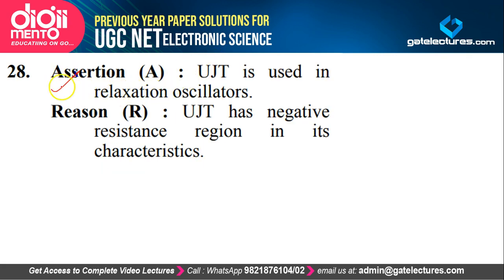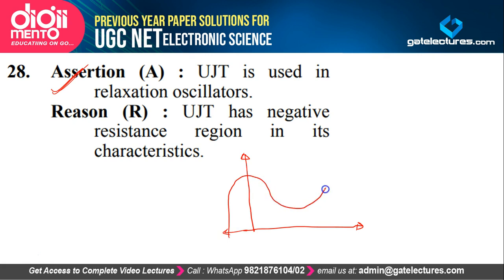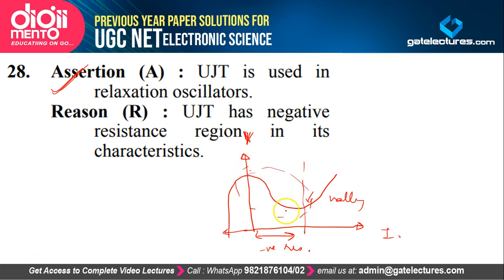Assertion: UJT is used in a relaxation oscillator — correct. Reason: UJT has a negative resistance region in its characteristics — also correct. The UJT's VI characteristics show a negative resistance region where increasing voltage leads to decreasing current. UJT is used in relaxation oscillators precisely because of this negative resistance region. The reason explains the assertion — the answer is option A.